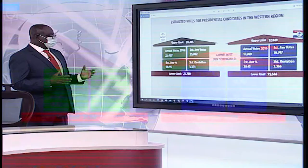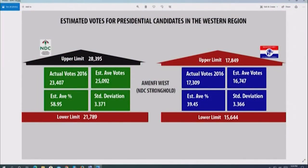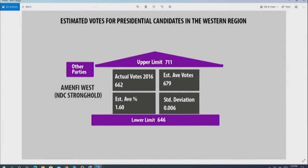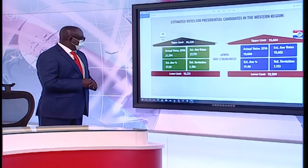Memphis West is also an NDC stronghold. Their estimated votes by the model were 25,000, but they actually had 23,000 — dropping votes here too. NPP's estimated average for Memphis West was 16,747; they actually had 17,000 — slightly above average. A pattern is emerging: NDC estimated at 27,000, but only gained 23,000 — dropping about 4,000 votes.